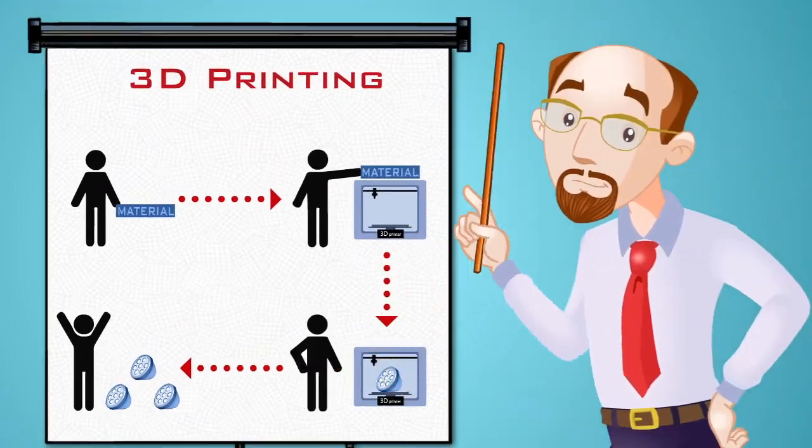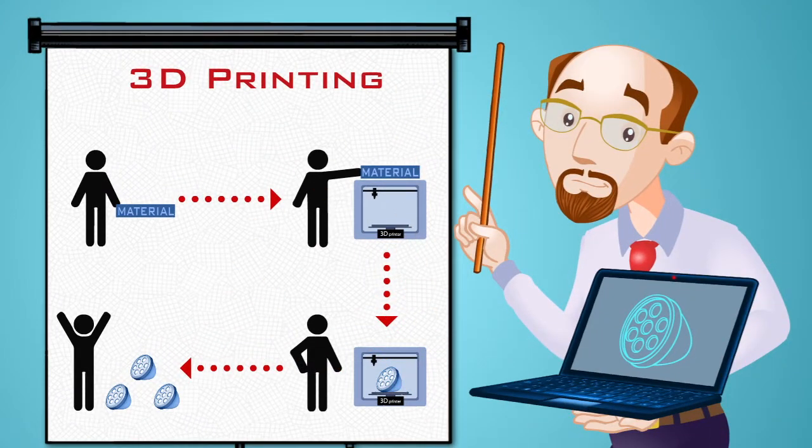So basically, now John's computer can create cheap and flexible inventory. Pretty cool, huh?